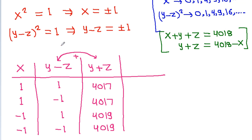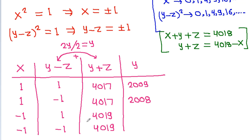So y will be (4017 + 1) divided by 2. The cases give y = 2009 or y = 2010, with corresponding g values. For example, y - g = 1 and y = 2009 gives g = 2008, and similar calculations for the other cases.